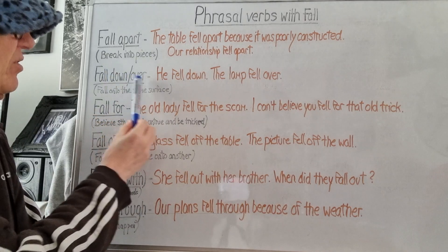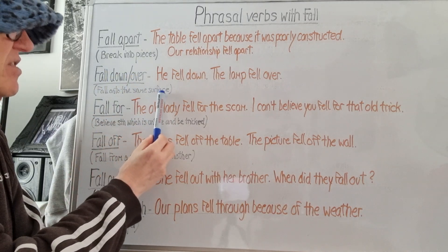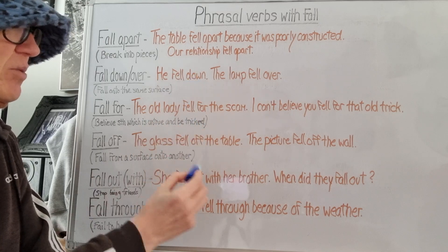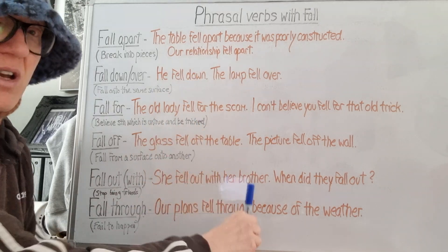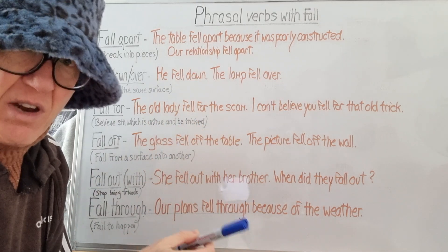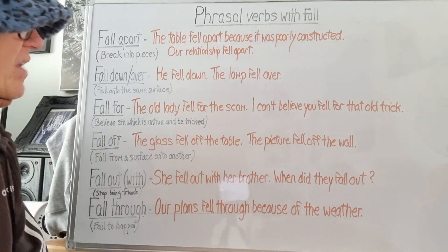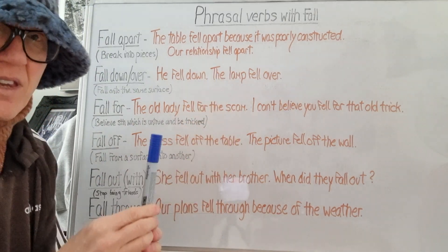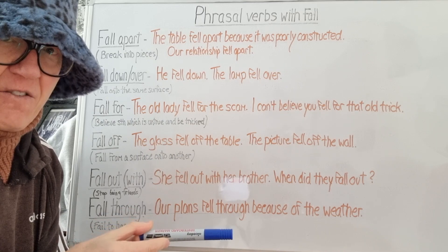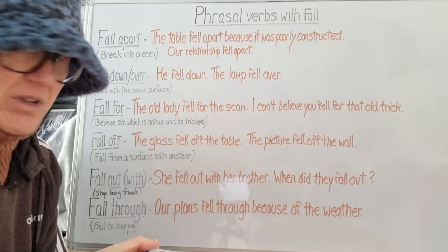'Fall down' or 'fall over' is to fall onto the same surface. He fell down — he was on the ground and then he fell, but he was still on the ground. The lamp fell over — the lamp was on the table and then it fell over; it's still on the table but it fell over.